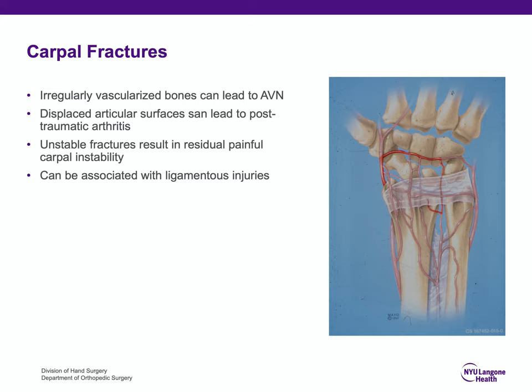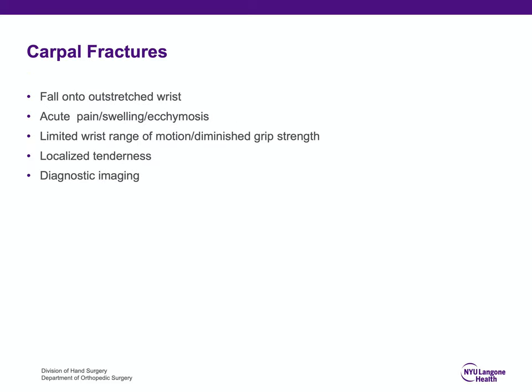With carpal bone fractures, there can be associated ligamentous injuries with each particular fracture. Wrist fractures commonly occur onto an outstretched wrist — a FOOSH, as we like to say, outstretched hand. There is commonly acute pain, swelling, and ecchymosis.